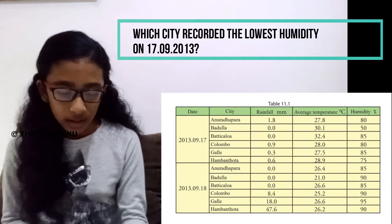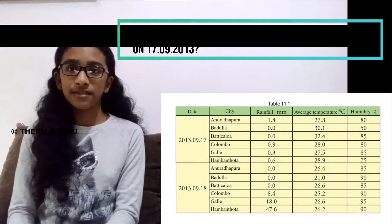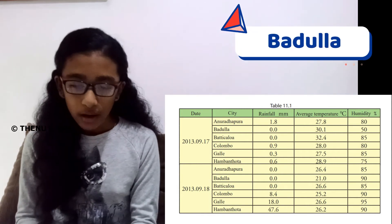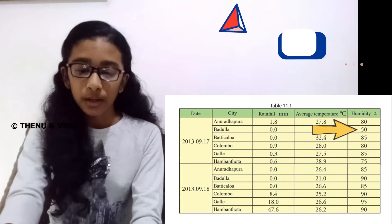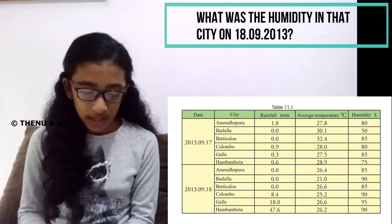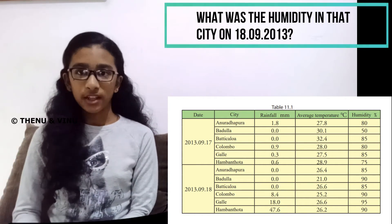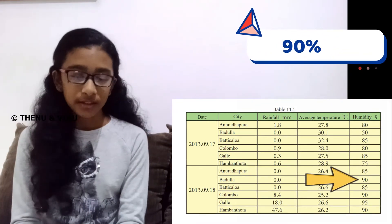The next question is: which city recorded the lowest humidity on 17-9-2013? You can answer this within five seconds. The answer is Badulla, because in the last column you can see the least humidity goes to Badulla — it has 50%. And the last question: what was the humidity in that city on 18-9-2013? The answer is 90% — on the next day Badulla has 90% humidity.